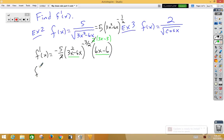I get f prime of x is equal to, I have a negative 5 on top, I have a 3x minus 3 on top. On the bottom, I have my square root of 3x squared minus 6x cubed.